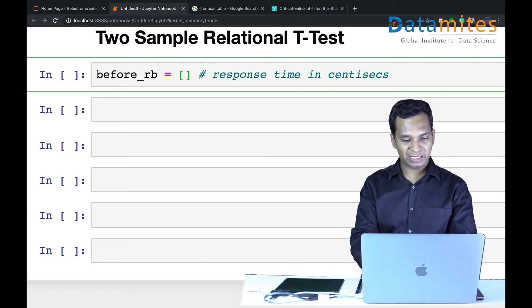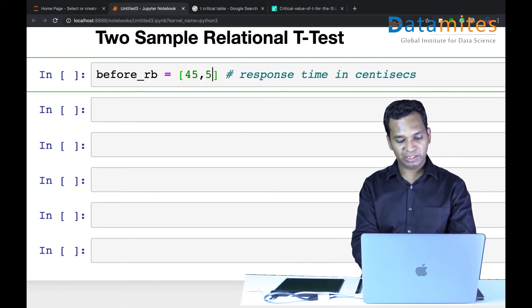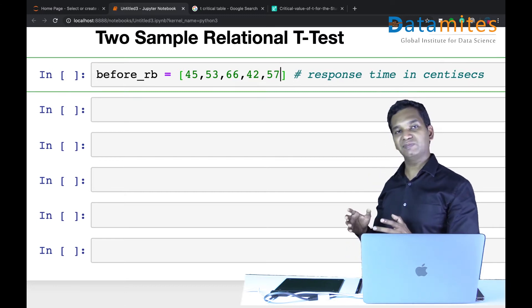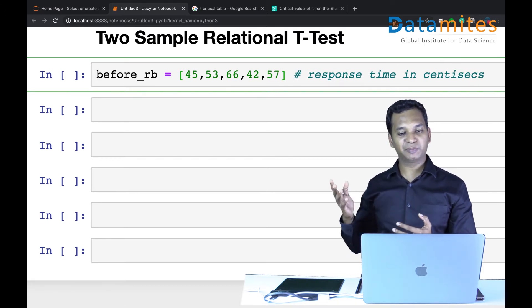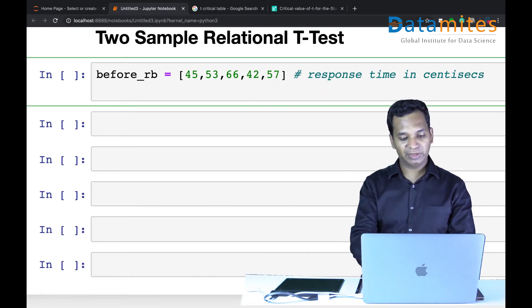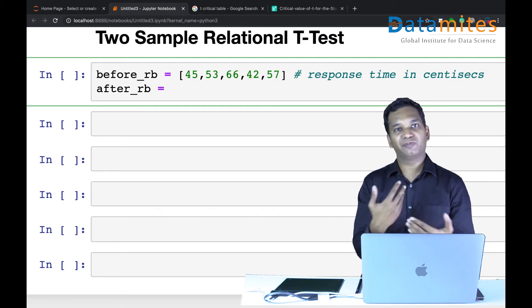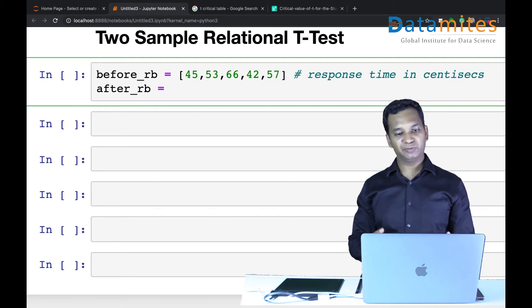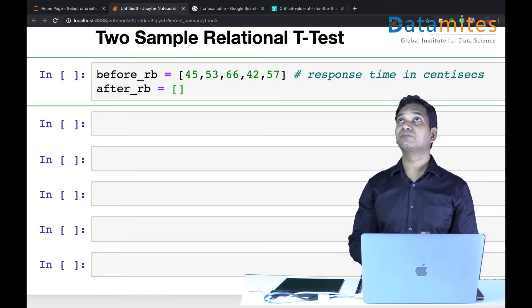The first person has 45 centiseconds response time, 53 response time, 66 response time, 42 response time, and then 57 response time. These are the different response times of five different people taking the response time test. Then we've given Red Bull to all five members and performed the same test one more time after 30 minutes, as it takes some time for Red Bull to make you active.